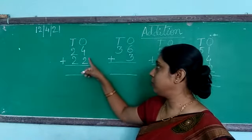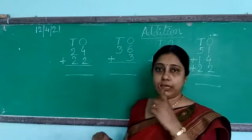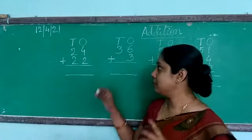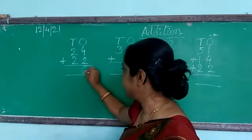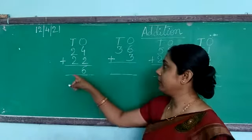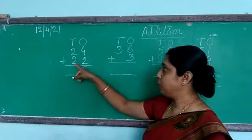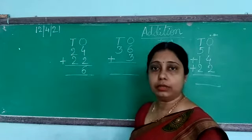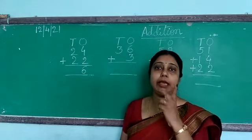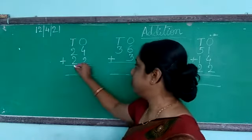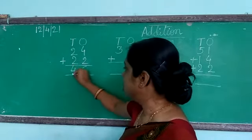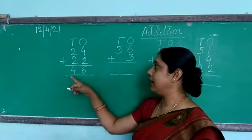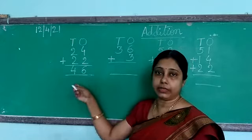Either after 2 you forward count up to 4, or from 4 you count 2 more. We are going to count from the bottom. After 2 you have to count 4 more: 3, 4, 5, 6. So we write 6 in the ones place. Now in the tens place, 2 plus 2 — after 2 you add 2 more, that means 3 and 4. We write 4. So after adding 24 and 22, the answer is 46.